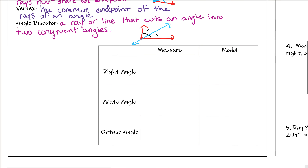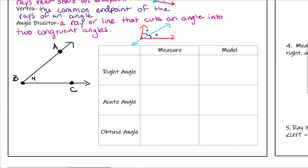Now let's draw an angle and talk about how to label them, and then go over specific types of angles. First, let's talk about labeling angles. If we're given an angle, we want to identify the vertex. In this example, point B is the vertex — it's that point at the corner of the angle.